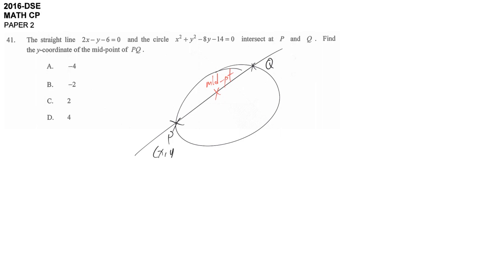If this point is x1, y1, and this point is x2, y2, what we are asking is to find the y-coordinate, which is y1 plus y2 divided by 2.